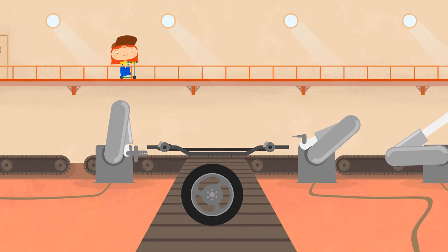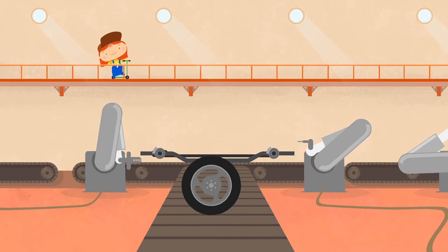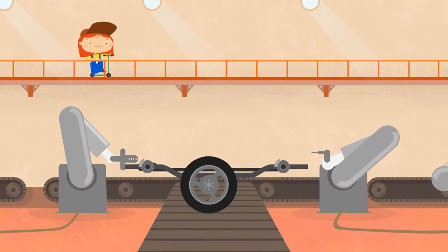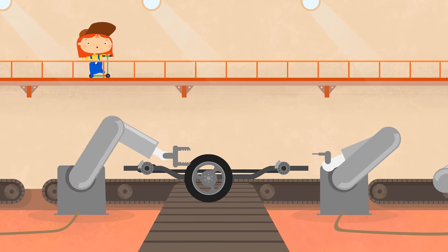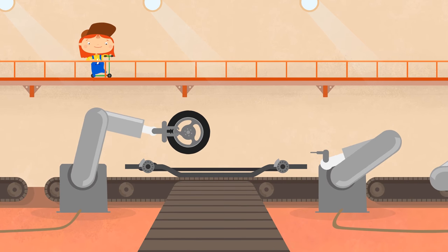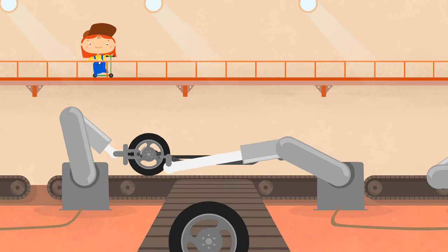Look! A wheel is coming off the conveyor belt. A wheel can be fastened with bolts and screws. Like this.